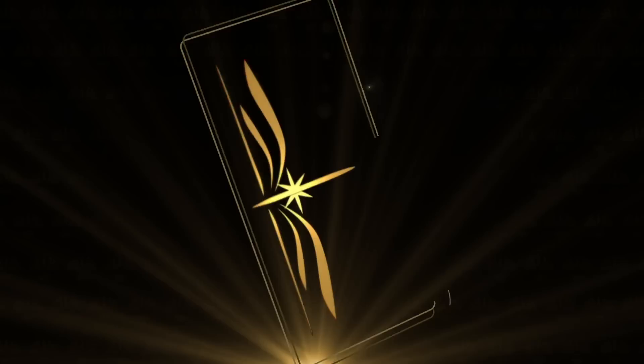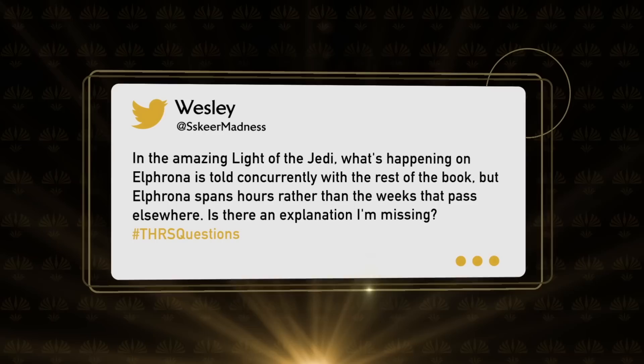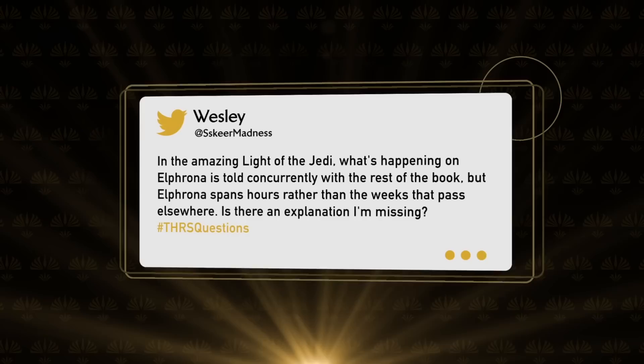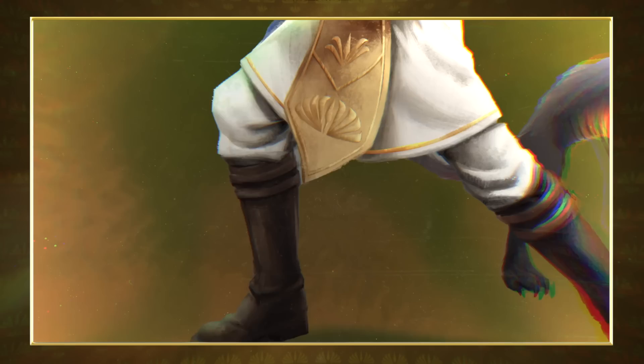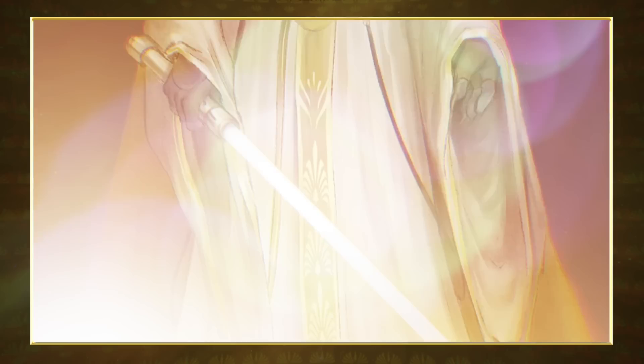No doubt you caught my cameo on This Week in Star Wars when I asked you for your questions about The High Republic using the hashtag THRSQuestions — and boy, did you deliver. I've got Lucasfilm's Emily Shkukani here to get some answers. The first question comes from SkierMadness, who asked: 'In The Amazing Light of the Jedi, what's happening on Elfrona is told concurrently with the rest of the book, but Elfrona spans hours rather than the weeks that pass elsewhere. Is there an explanation I'm missing?' I don't think you're missing anything. It's definitely intentional the way the chapters are placed. We wanted readers to keep in mind that Bell and Loden's storyline was happening throughout the book rather than just placing it at the very end. By spacing it out, it kept the audience interested in their story — readers are constantly wondering what's been happening, how it will tie in, and then it pays off in the end.